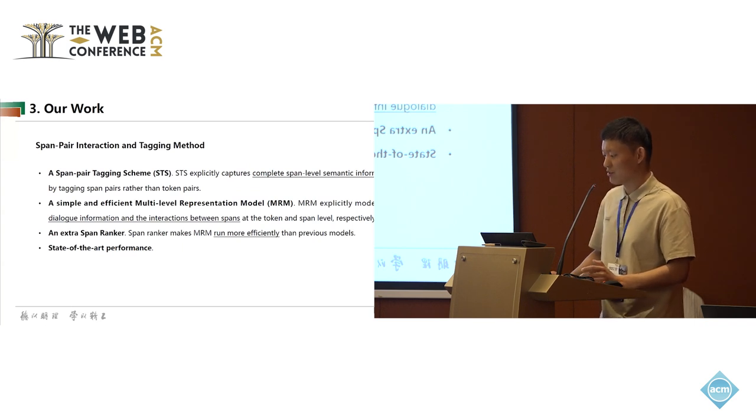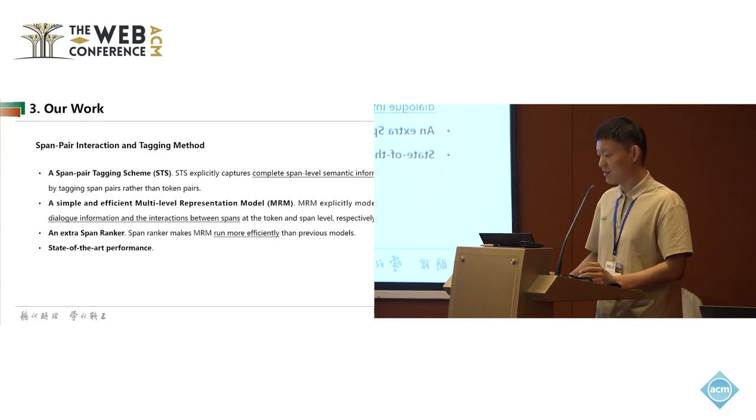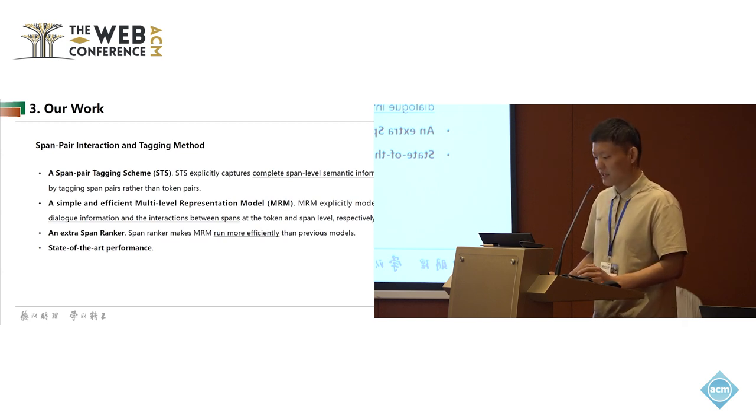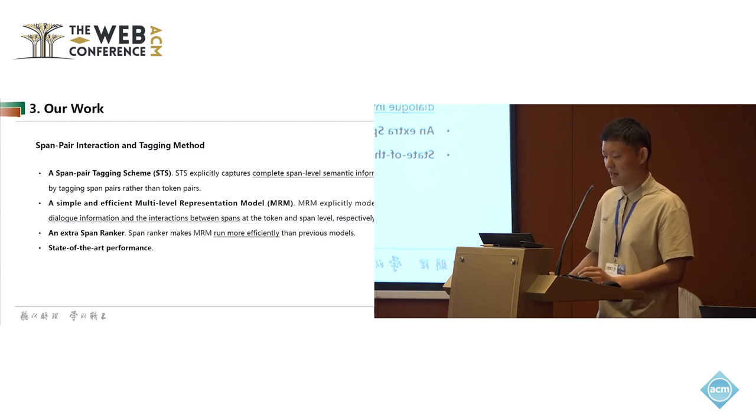In order to solve these issues of previous works, we propose a span pair interaction and tagging method, which includes a span pair tagging scheme, a simple and efficient multi-level representation model, and an extra span ranker. Concretely, STS explicitly captures complete span level semantic information by tagging span pairs rather than token pairs. MRM explicitly models the dialogue information and the interactions between spans at the token and span level respectively. Span ranker makes MRM run more efficiently than previous models. Our method obtains state-of-the-art performance in the DIA-ASQ multilingual datasets.